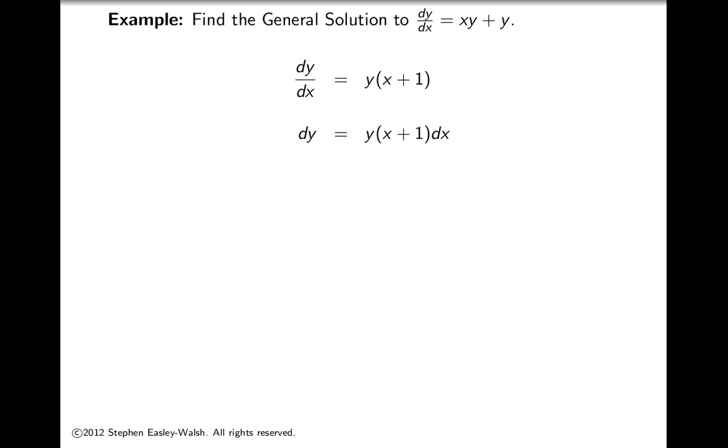The y only part is y and the x only part is x plus 1, and I bring the dx up to the right. Now I bring the y down to the left, and I integrate both sides. On the left, 1 over y, the antiderivative here is log y. And on the right it'll be x squared over 2 plus x plus the constant.